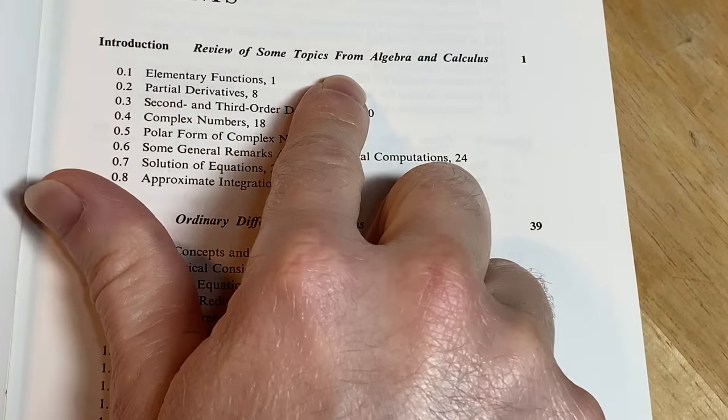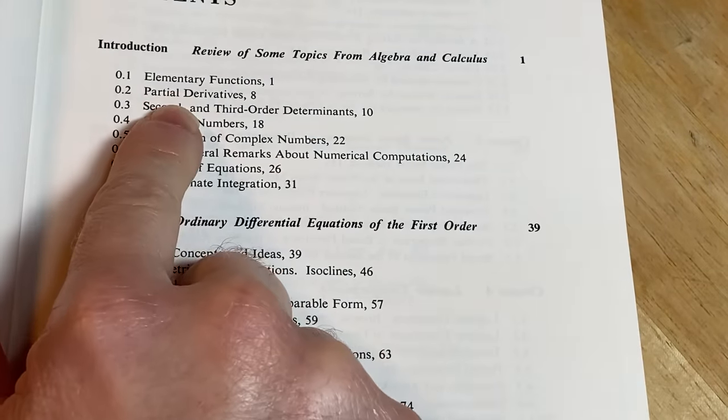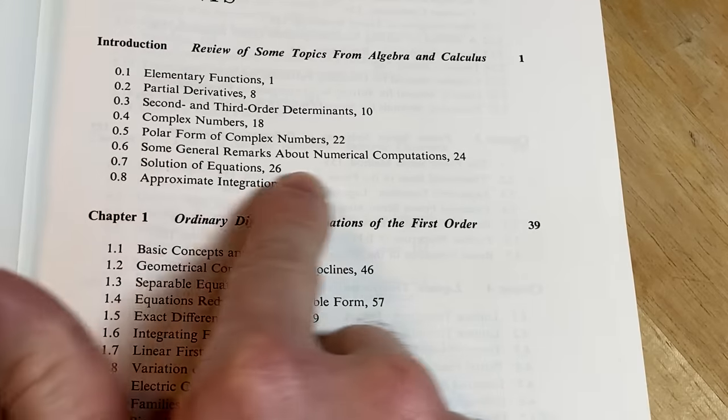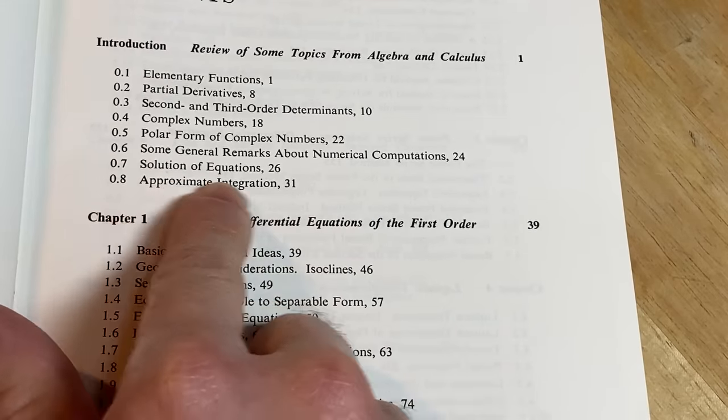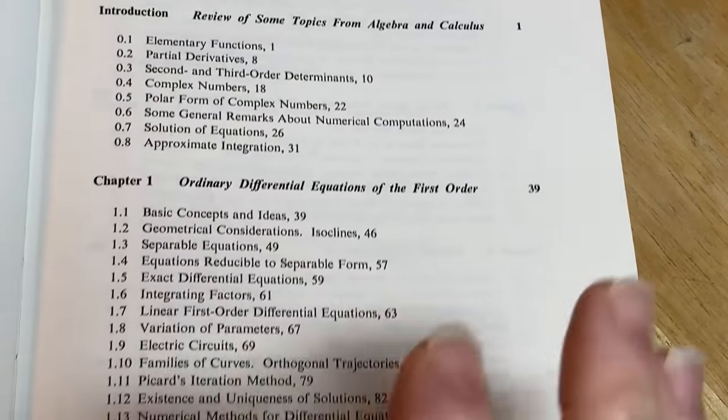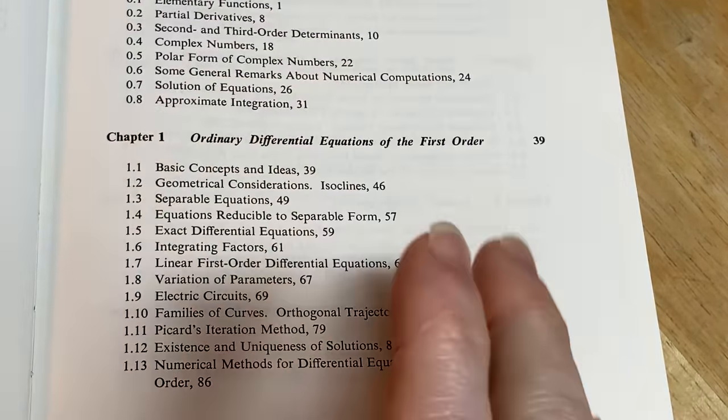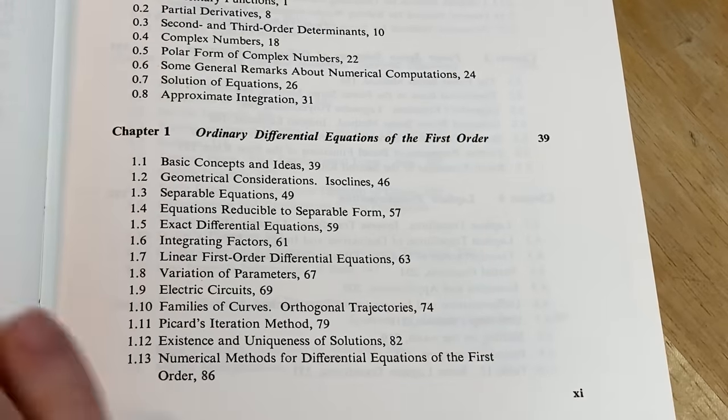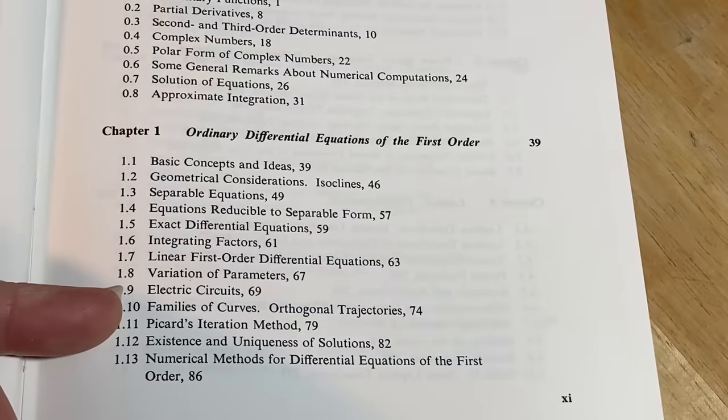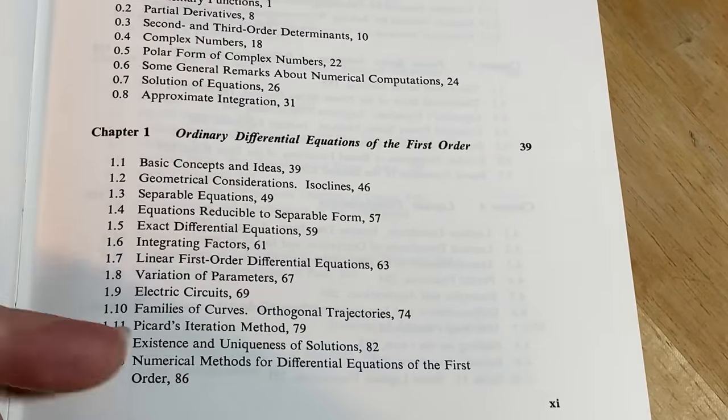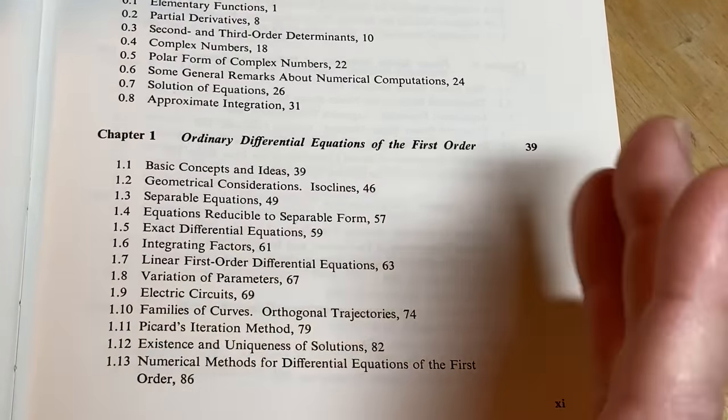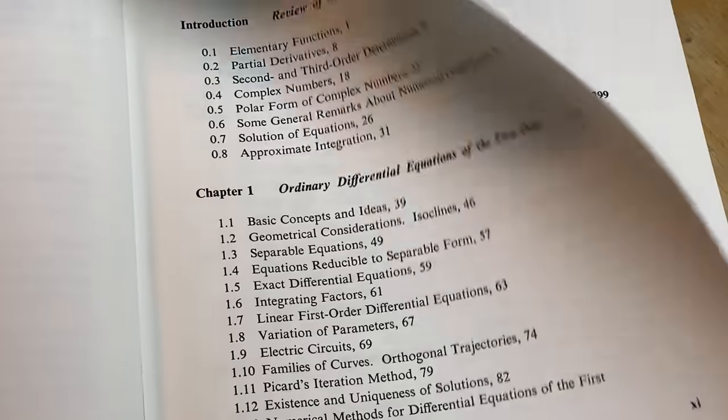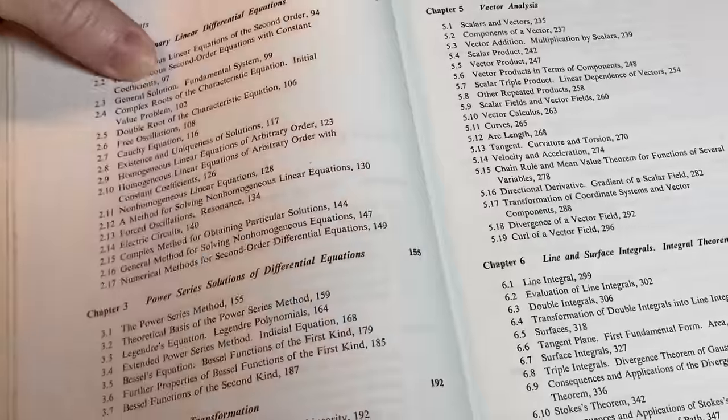So it starts with review of some topics from algebra and calculus. So functions, partial derivatives, that's calc 3, determinants, that's linear algebra, complex numbers, polar form of complex numbers, some stuff on computations, solution of equations, and then approximate integration. So more calculus there. Differential equations. So now you have like a course on ordinary differential equations basically. At least this is the beginning. So if you were to take a course on differential equations, many of these topics would appear on the first two exams and some of them you wouldn't even study perhaps, because there's some approximation techniques which you might skip. So already you're getting a good chunk of differential equations plus some extra stuff. And this is just in chapter one, so on your way to becoming a so-called mathematics expert.